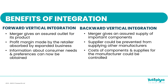With backwards vertical integration, the merger gives an assured supply of important components, which is essential in the production process. The supplier could be prevented from supplying to other manufacturers, which creates some sort of monopoly. The costs of components and supplies for the manufacturer could be controlled, which will help ensure that costs of production are low and we can secure profits in the business.